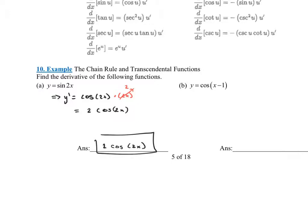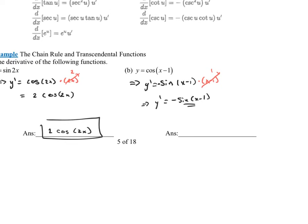How about the derivative of cosine of (x - 1)? The derivative of cosine of u is negative sine of u — keep the inside the same — times the derivative of the inside. The derivative of (x - 1) is simply 1, so y prime equals negative sine of (x - 1). Put that in the answer blank.